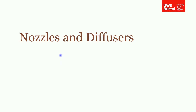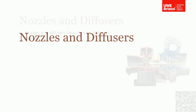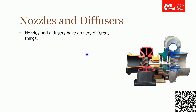In this section I'm going to talk about nozzles and diffusers. As you might expect, these two things do very different jobs — in fact, they do the opposite of each other. I'm going to talk about their function, and to do this I'm going to give you the example of a turbocharger.